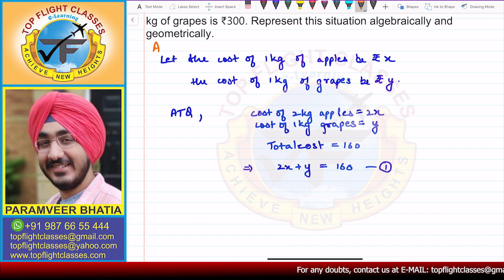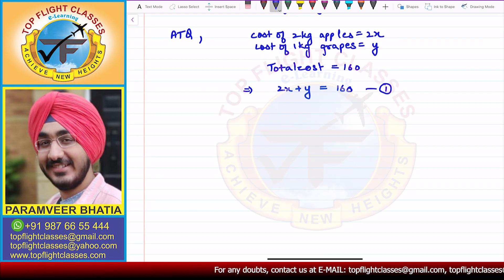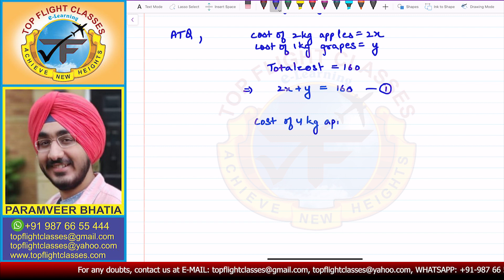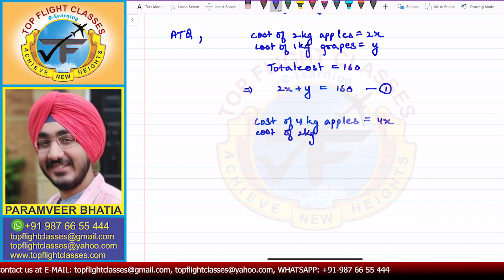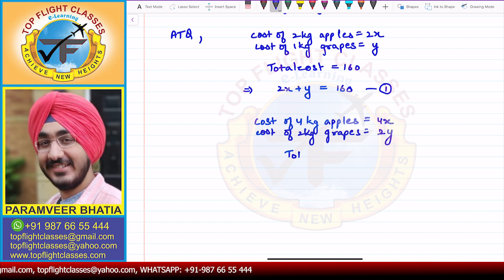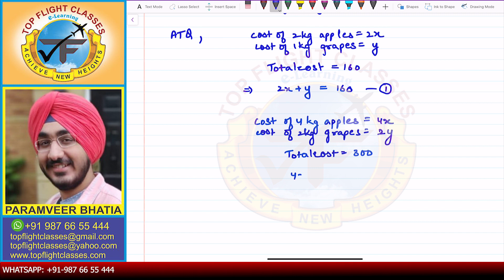In the second case, after a month, the cost of 4 kg of apples is equal to 4x, and the cost of 2 kg of grapes is 2y. The total cost is 300, so we get 4x plus 2y is equal to 300. This is the second equation, completing the algebraic solution.